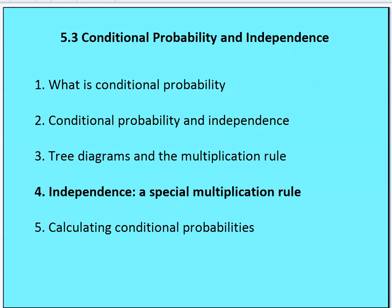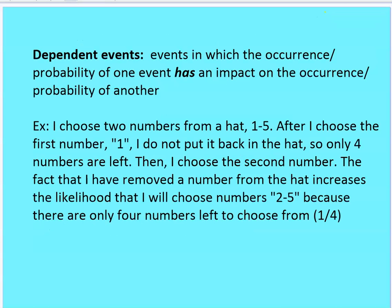Independence and the special multiplication rule — which we've already reviewed. Dependent events are events in which the occurrence or probability of one does have an impact on the other. For example, I choose two numbers from a hat, one through five. After choosing the first number, I do not put it back, so there are only four numbers left. This increases the likelihood of choosing the remaining numbers. The probability goes from one-fifth for a given number to one-fourth for the next, because removing that number reduces the possible outcomes in the denominator.